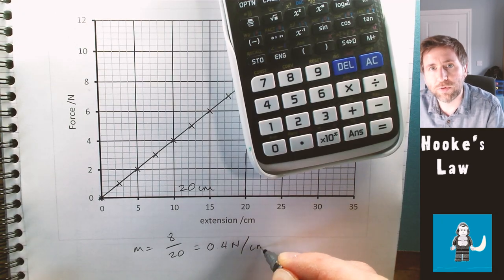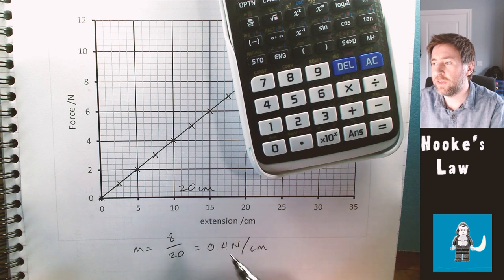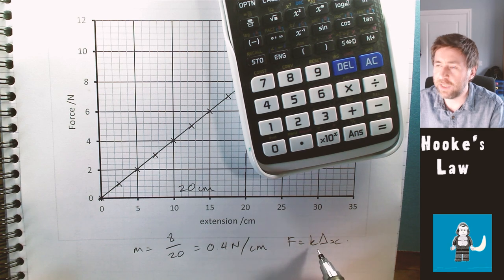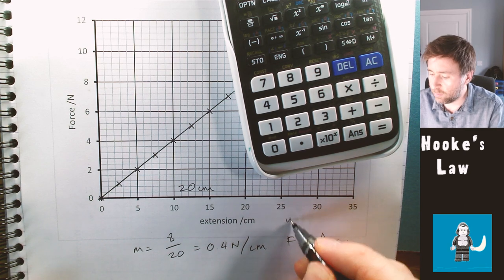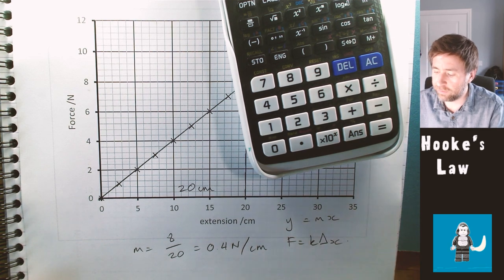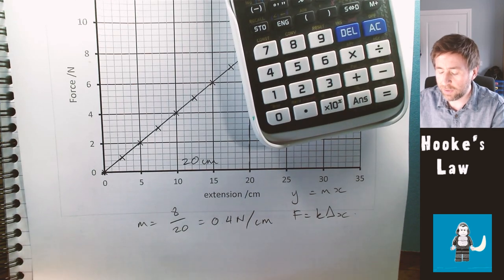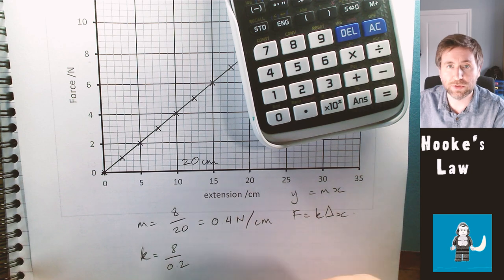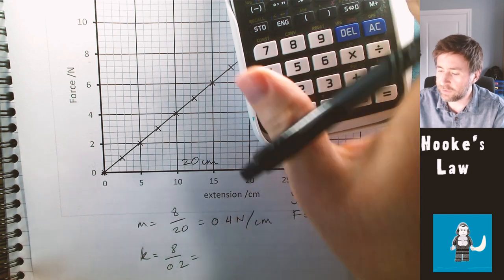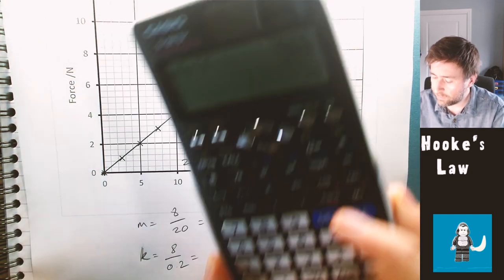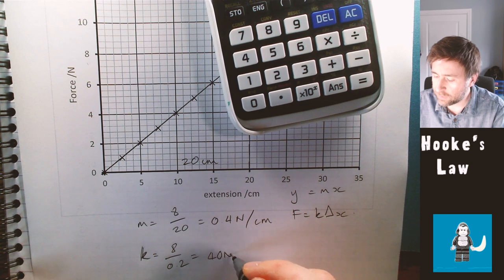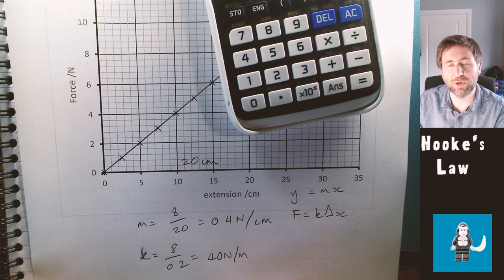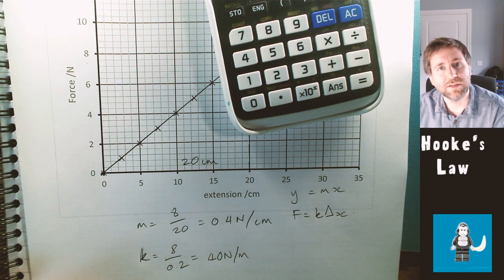The line has gone from 0 to 8 newtons — the rise is 8 newtons — and from 0 to 20 centimetres — the run is 20 cm. So the gradient is 8 divided by 20, which is 0.4 newtons per centimetre. Converting to SI units, k equals 8 divided by 0.2 meters, which gives 40 newtons per meter. That is the stiffness of this spring, which we can use later in energy calculations.